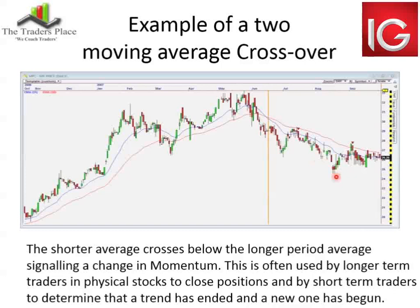It's often used by longer-term traders, especially on physical stocks, to close positions. If I have a longer-term position and I've been in the trade two or three years, and the market suddenly starts to change personality — the 21 crosses below the 50, or the 50 crosses below the 100 — that just tells me momentum has definitely changed.